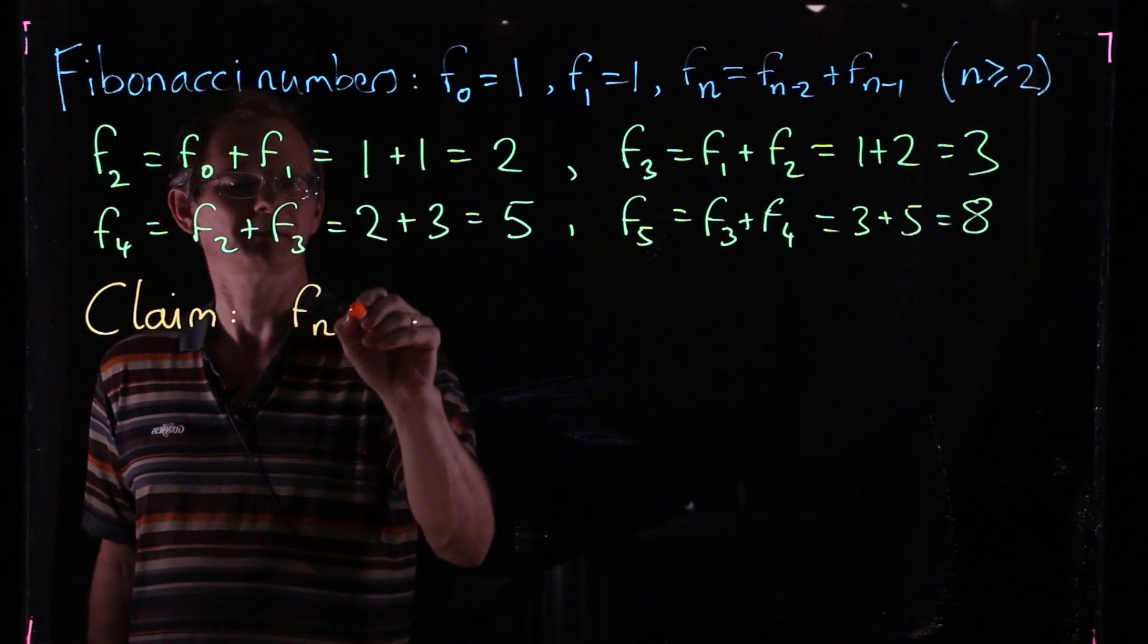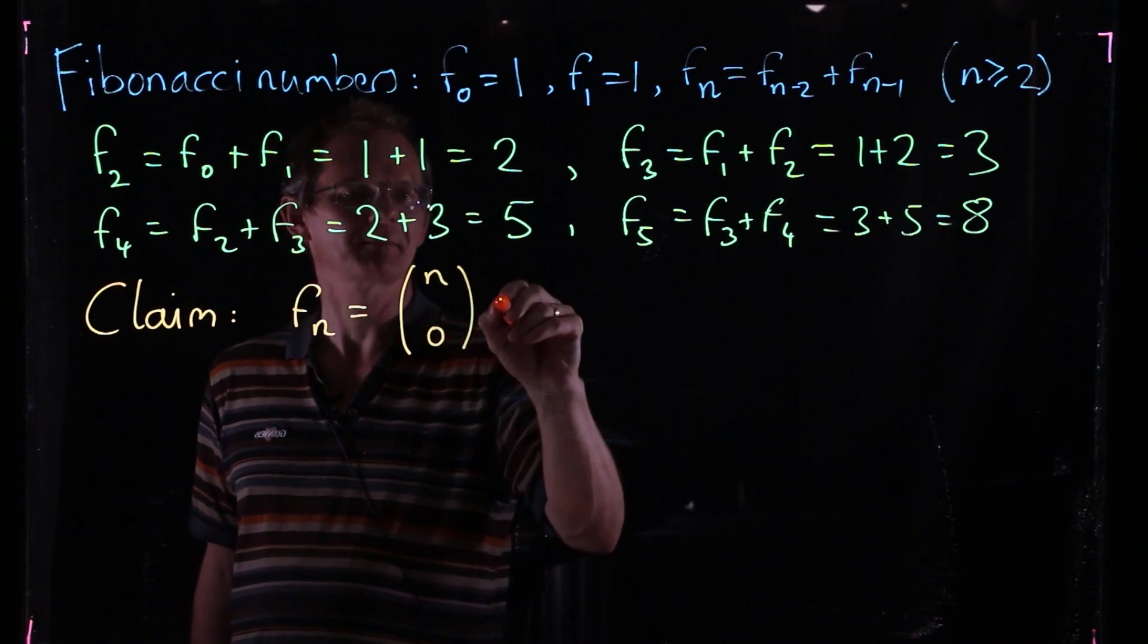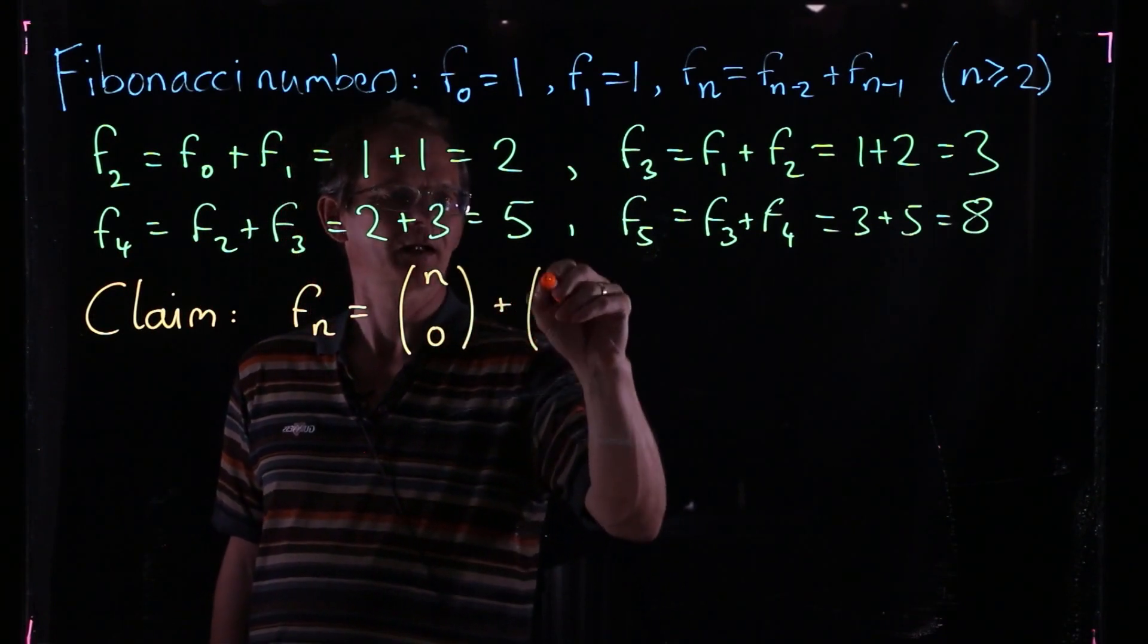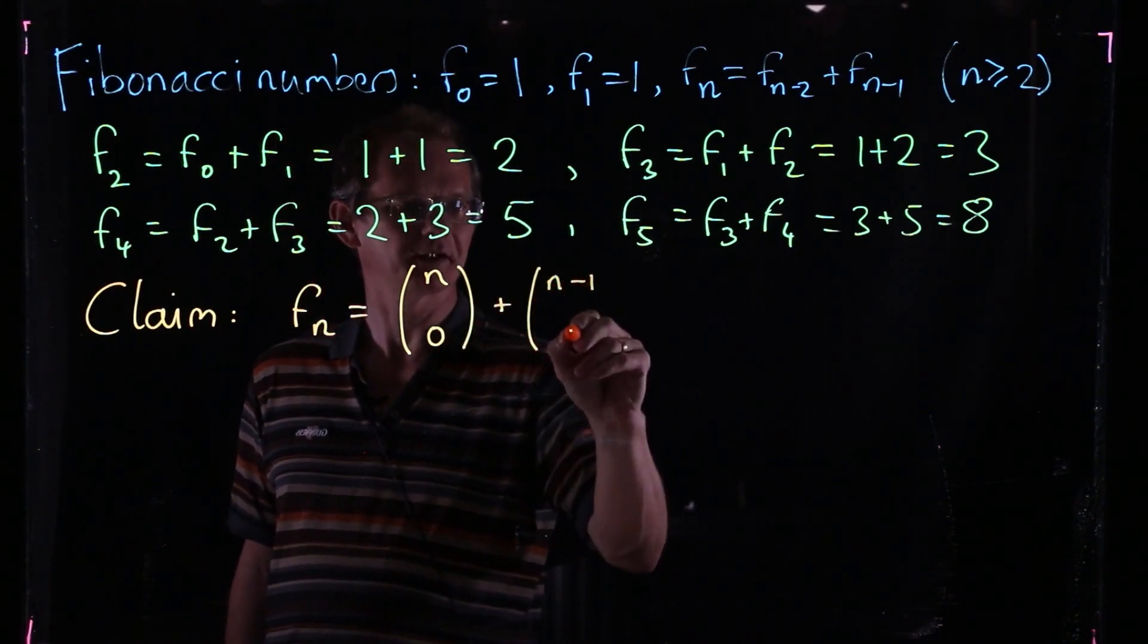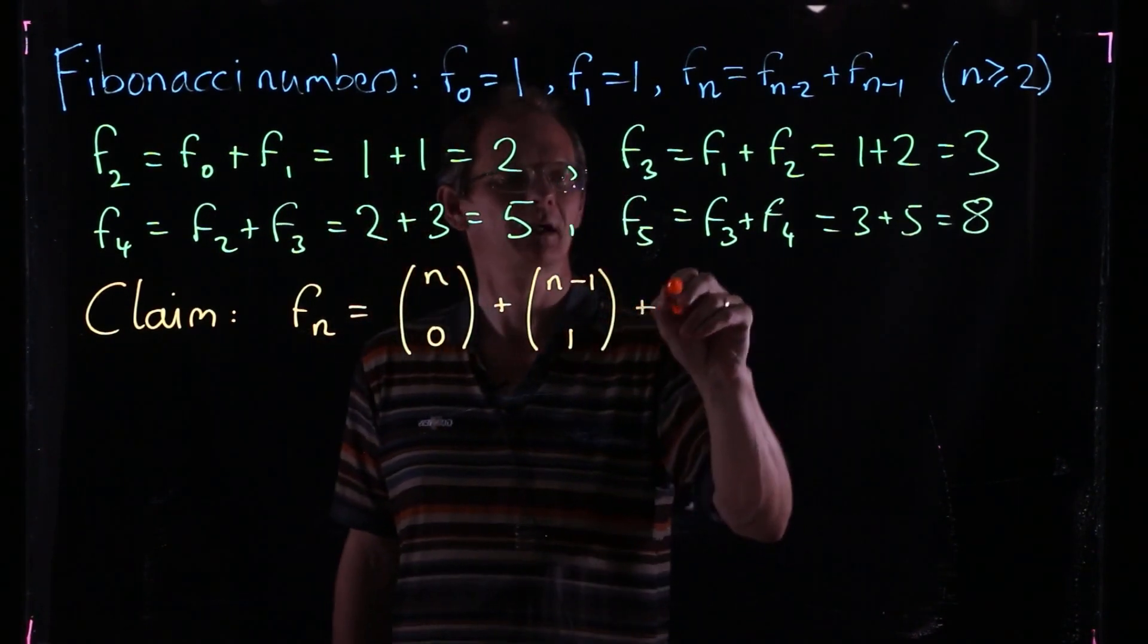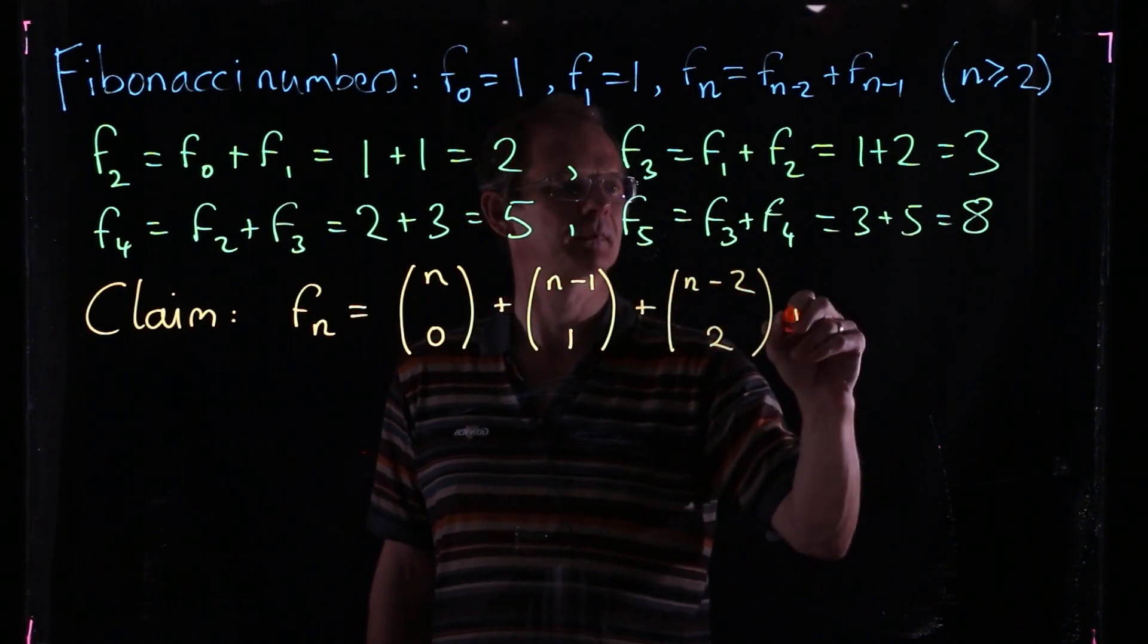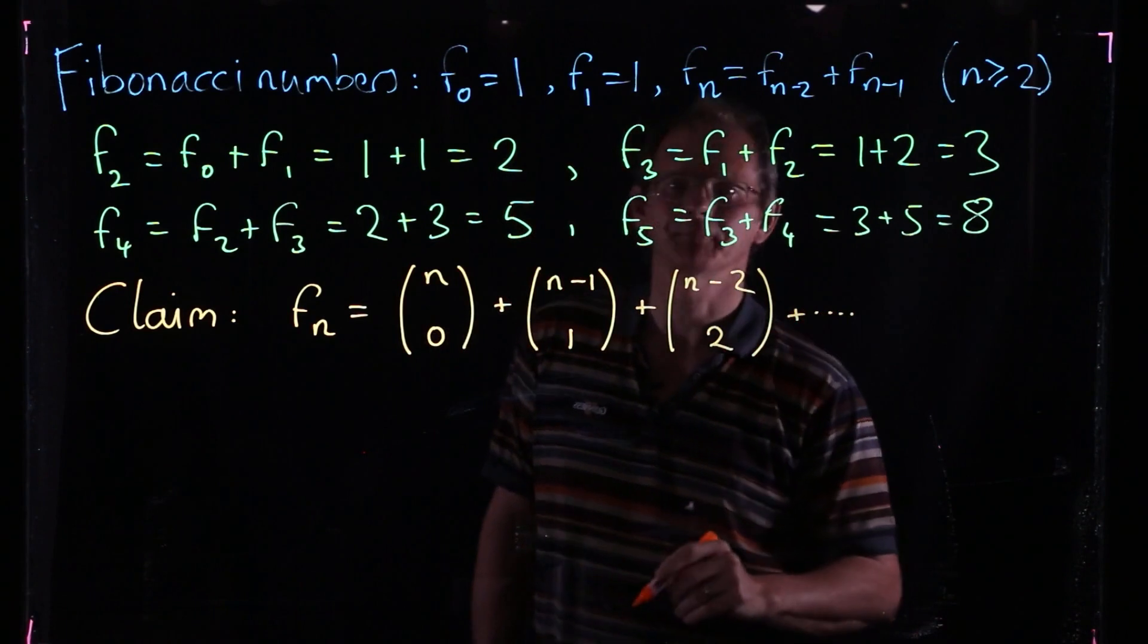So the claim is that the Fibonacci number Fn equals the binomial coefficient n choose 0, and then we decrease the top by 1 and increase the bottom by 1: n-1 choose 1. Decrease the top by another one and the bottom as well, and so on.